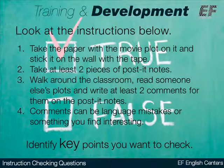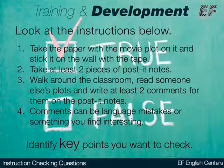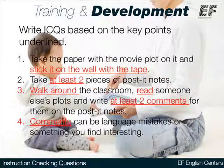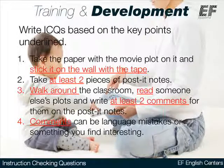Pause now and read these instructions for a task near the end of a class. Can you identify the key points you think may stop the activity from working? Pause again and check your answers with those underlined here. Now you've identified some key points you want to check, pause and write some instruction checking questions for this task.